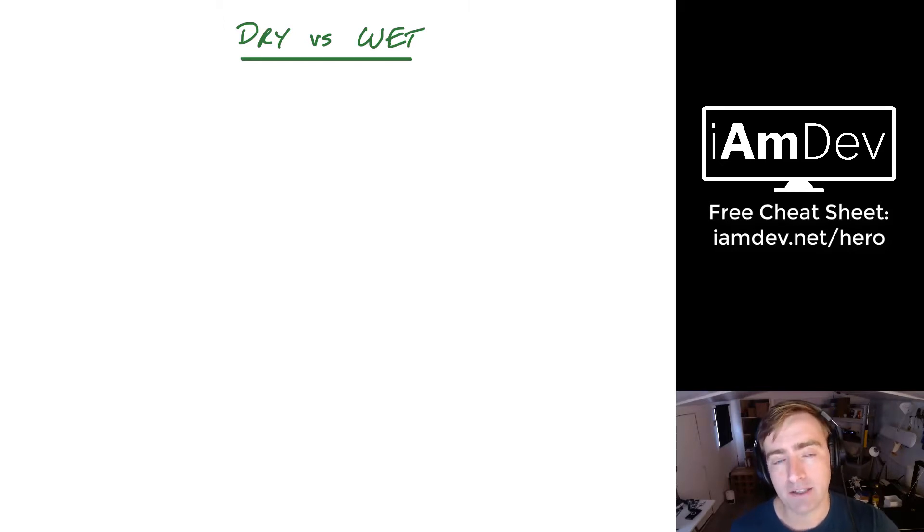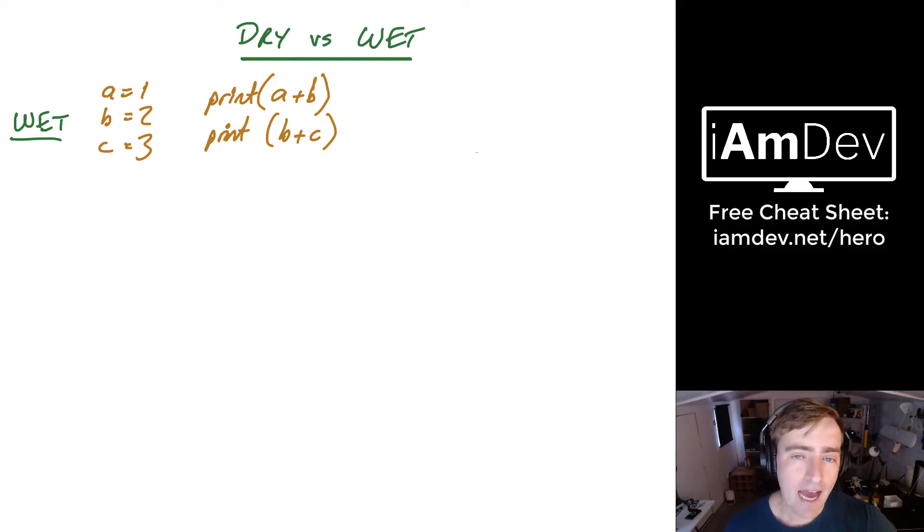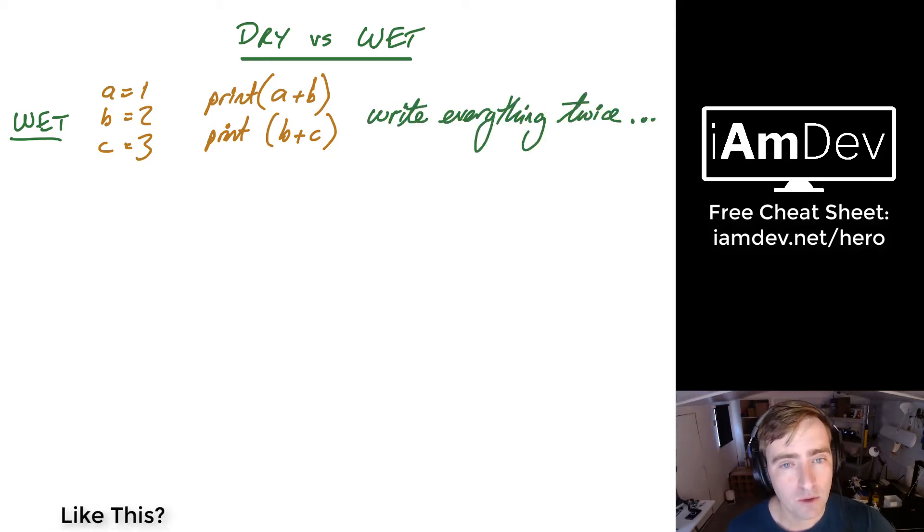So what do we have first? Well, we have WET first. Let's say we have three variables a=1, b=2, c=3, and then we want to print additions of two of those: print(a+b) and print(b+c). Now if you've programmed for a while, you'll know this is wrong in a way. We've repeated the word print twice there. That's what WET stands for: Write Everything Twice.